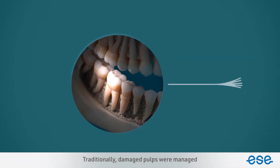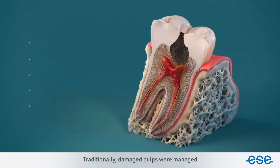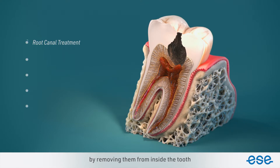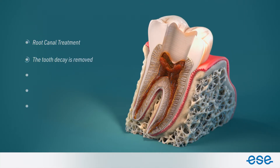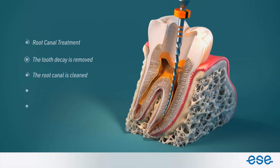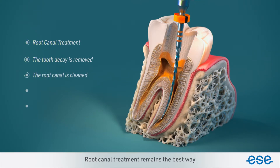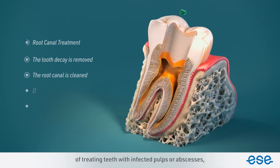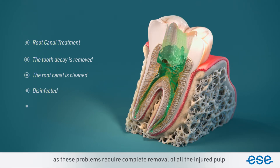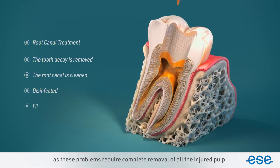Traditionally, damaged pulps were managed by removing them from inside the tooth and then carrying out root canal treatment. Root canal treatment remains the best way of treating teeth with infected pulps or abscesses, as these problems require complete removal of all the injured pulp.